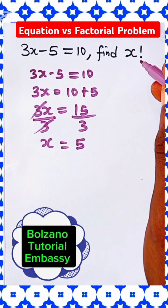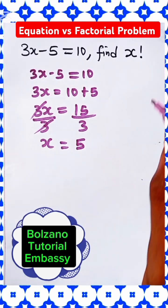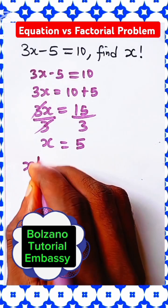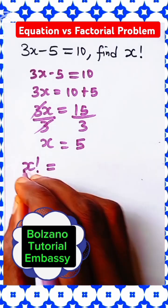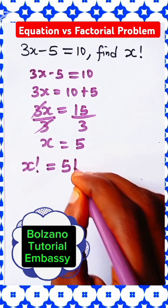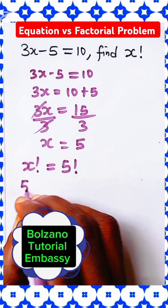Now, we're asked to find x factorial, not just x. So which means that x factorial is equal to—now since x is 5, we're looking for 5 factorial. What is 5 factorial?